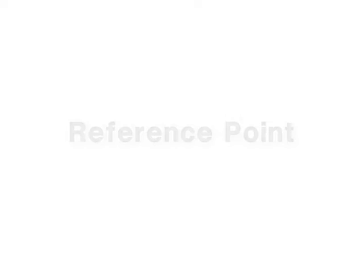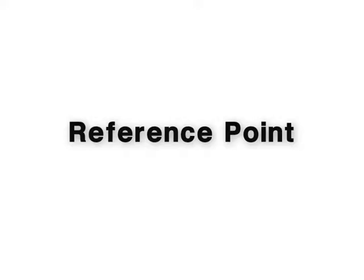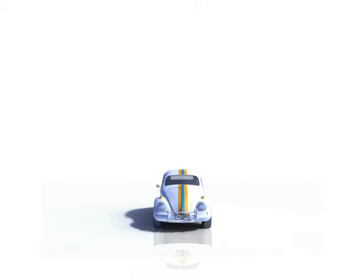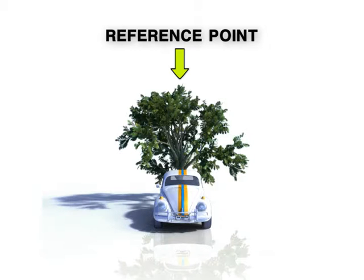In order to describe the position of an object, you need a reference point and a set of reference directions. It is difficult to describe the position of the car because we do not have a reference point. A reference point can be any object. In this case, we will use a tree. Note that the reference point can also be referred to as the origin.